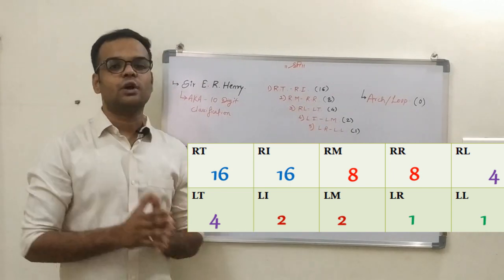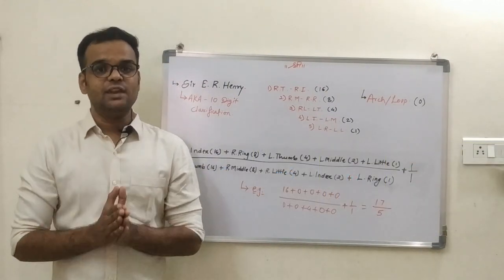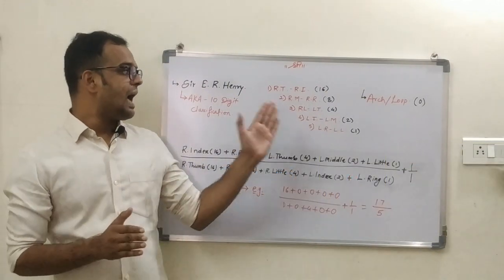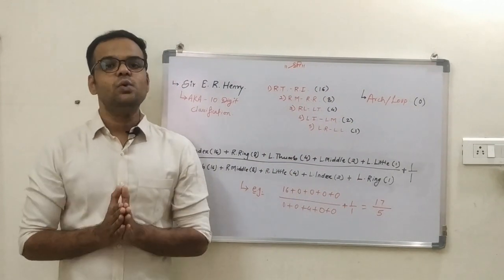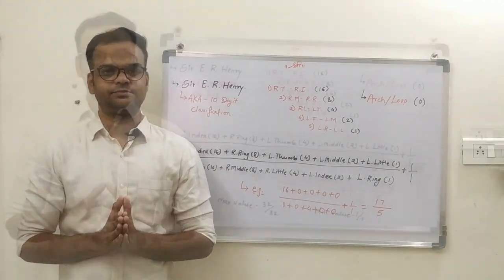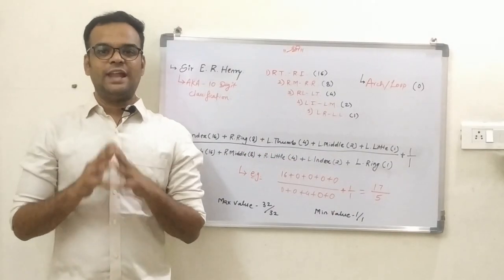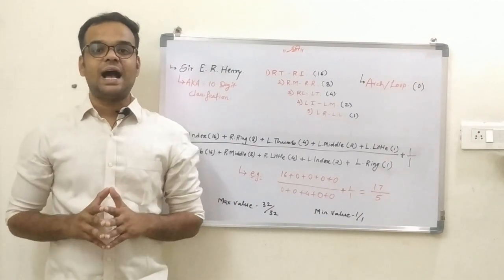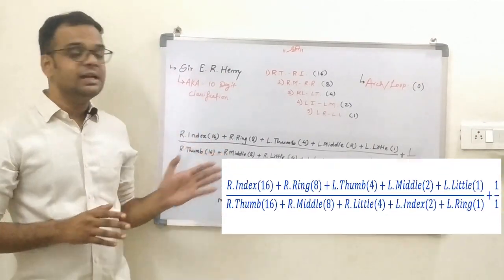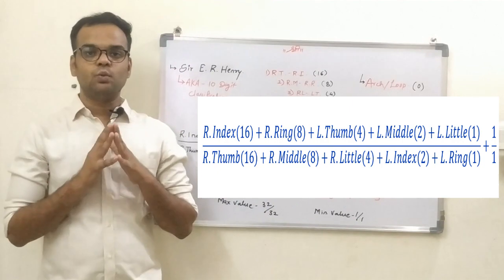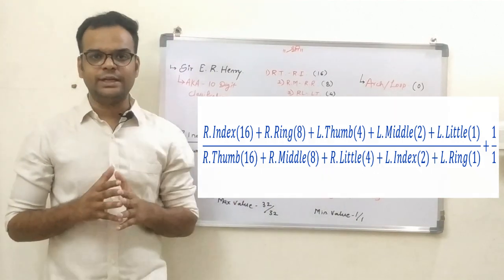For the fourth pair, it is 2, and for the last pair, it is 1. If any fingers contain an arch or loop, the value assigned is 0. After values for all 10 fingers are obtained in this manner, they are totaled and 1 is added to both numerator and denominator.